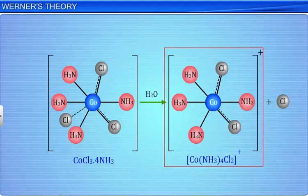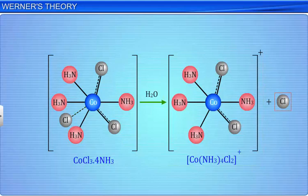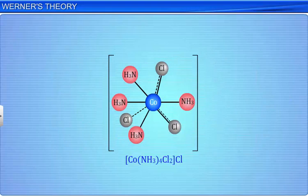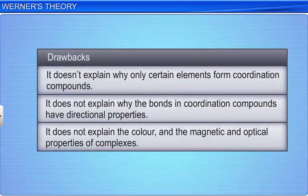Although Werner's theory successfully explains the bonding features in coordination compounds, it suffers from some drawbacks. It doesn't explain why only certain elements form coordination compounds. It does not explain why the bonds in coordination compounds have directional properties. It does not explain the color and the magnetic and optical properties of complexes.